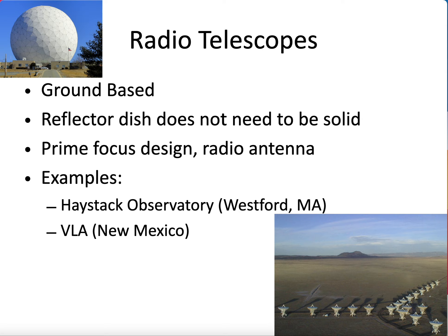Radio telescopes are most often found on the ground. The atmosphere is very translucent to visible light — which is why we evolved to see it — and also translucent to radio waves, which is why we use them so often to communicate. So on the ground you'll frequently find both optical and radio telescopes.